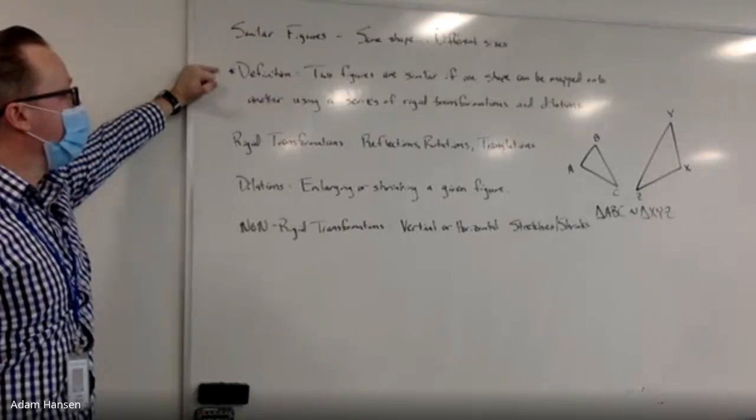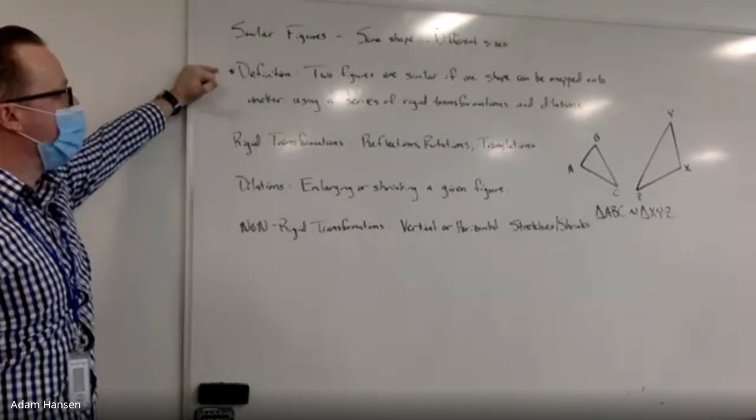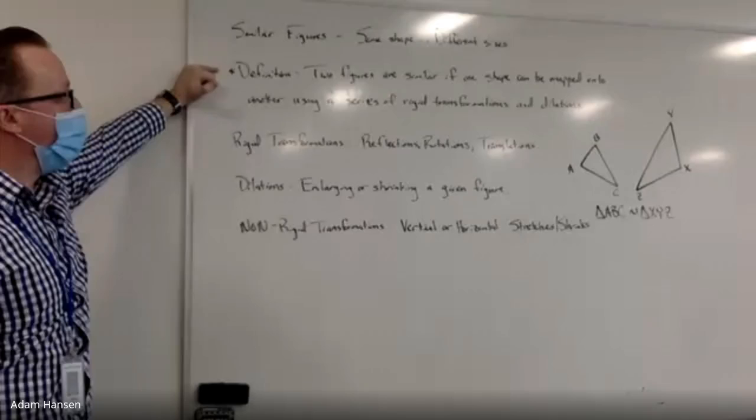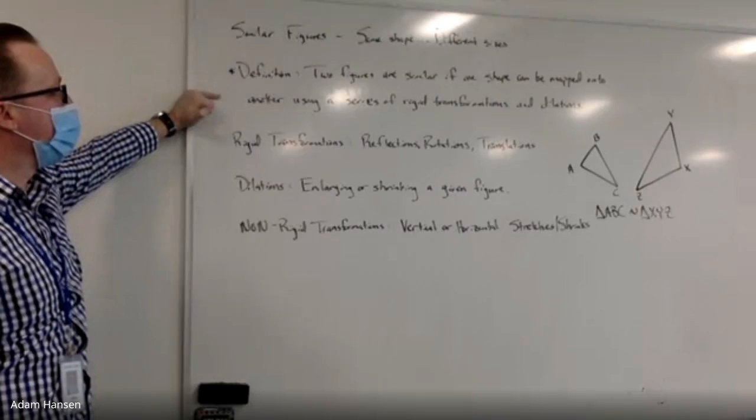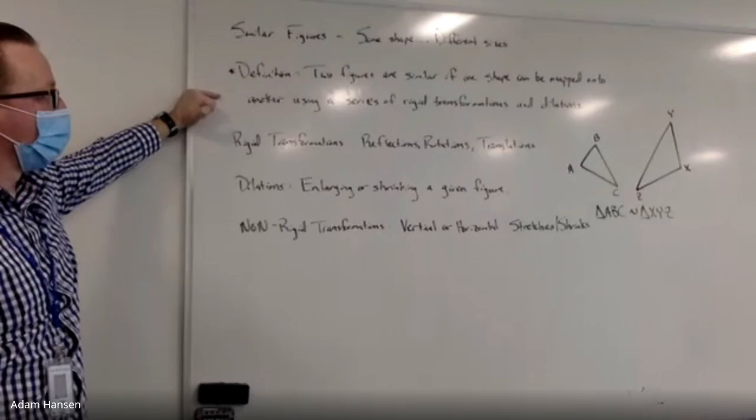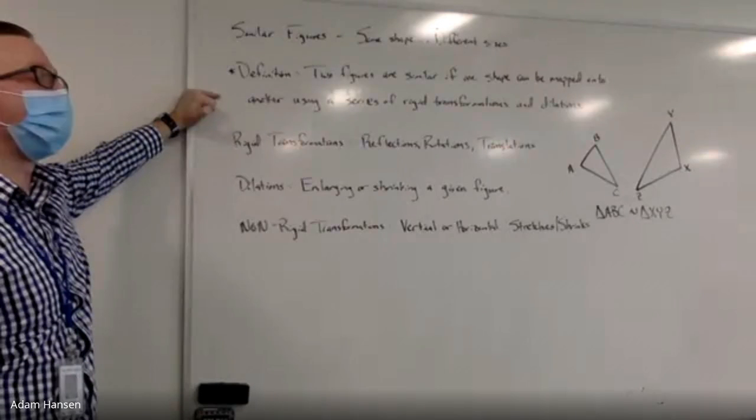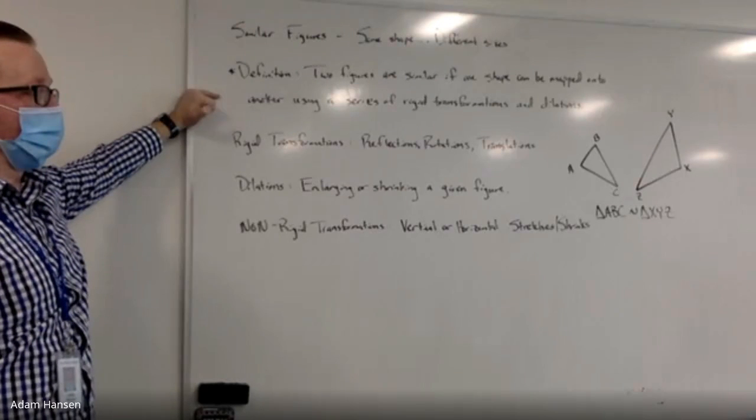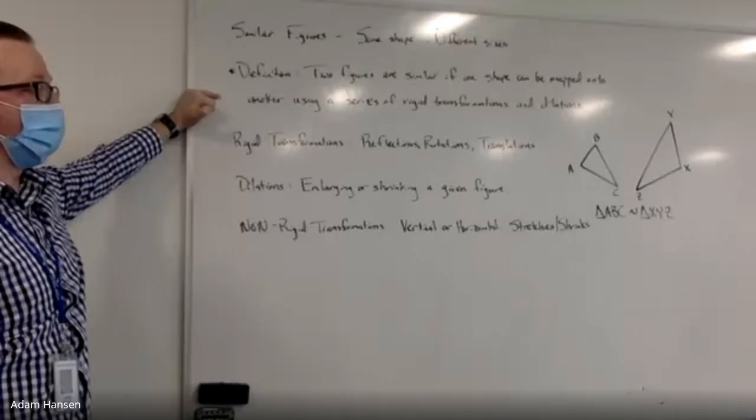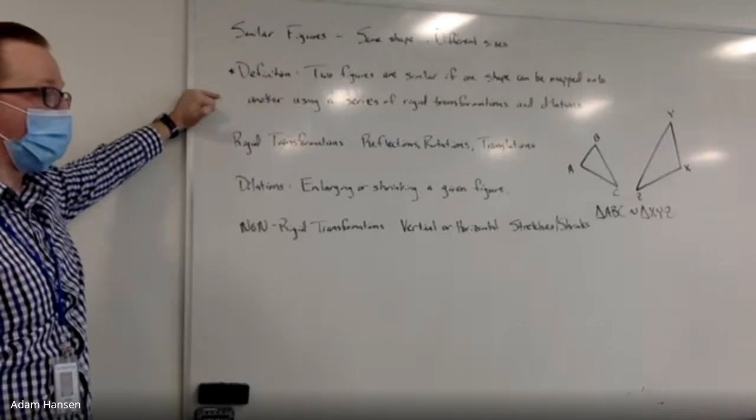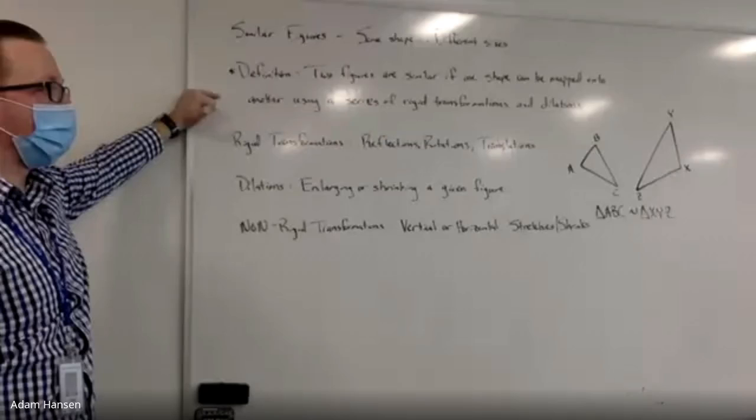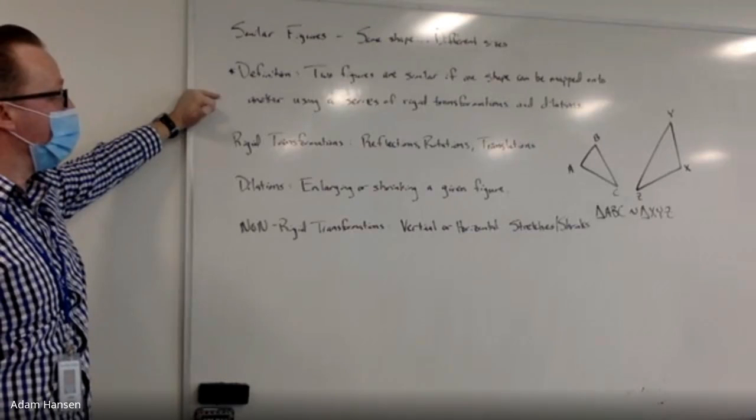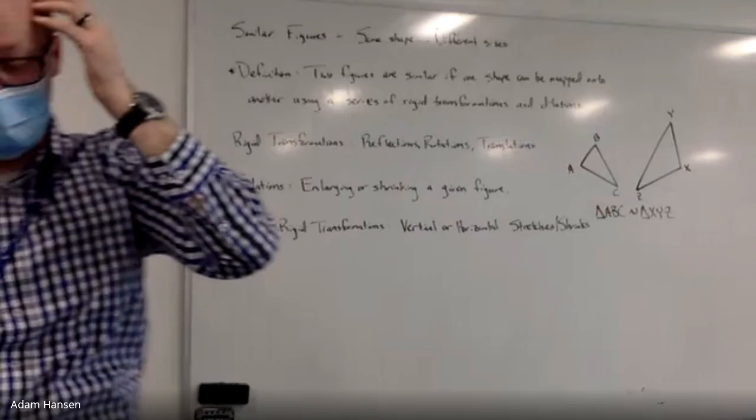More formally, two different figures are similar if one shape can be mapped or turned into the other using a series of what are called rigid transformations and dilations. You're going to need this information to work through the practice on Khan Academy, so I want to give you this first and we take a look at some other stuff on our computer.